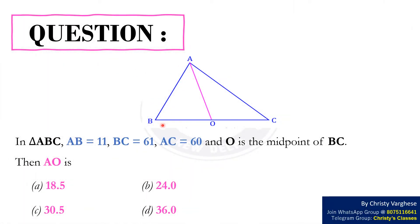Question. In triangle ABC, AB equals 11, BC equals 61, AC equals 60 and O is the midpoint of BC. Then AO is,